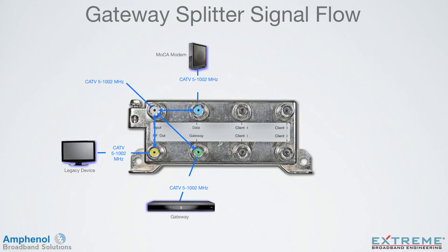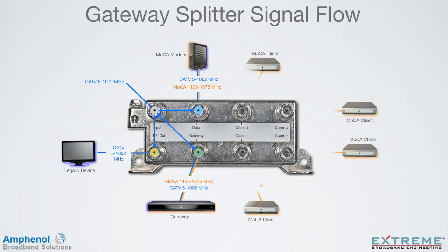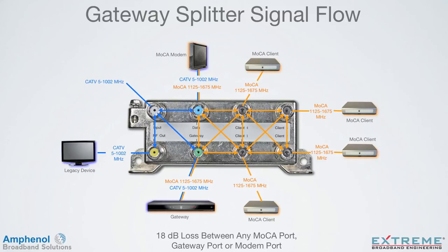Now let's look at the MOCA signal path. The MOCA modem needs to transmit and receive MOCA frequencies to communicate to other MOCA devices such as the gateway or Ethernet coaxial bridges. So the modem port also passes MOCA frequencies from 1125 to 1675 MHz. The same thing applies to the gateway port, as the gateway needs to communicate to the MOCA clients at the MOCA frequencies. The modem and the gateway ports are the only two ports that pass both CATV and MOCA frequencies. The MOCA client devices only need to communicate with the gateway at MOCA frequencies, and there's no need for traditional CATV frequencies at these devices. This is what separates the MOCA gateway splitter from traditional CATV splitters.